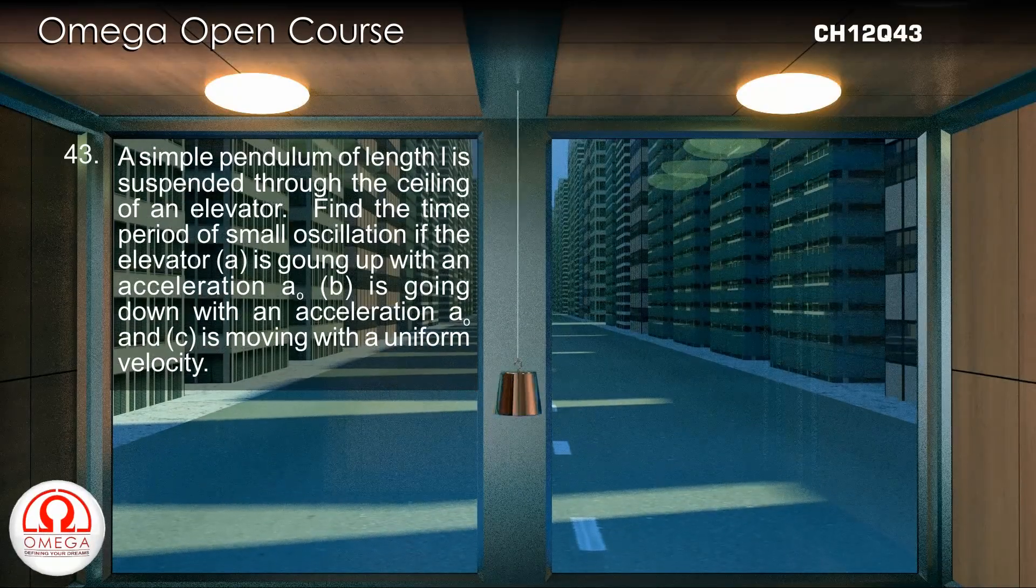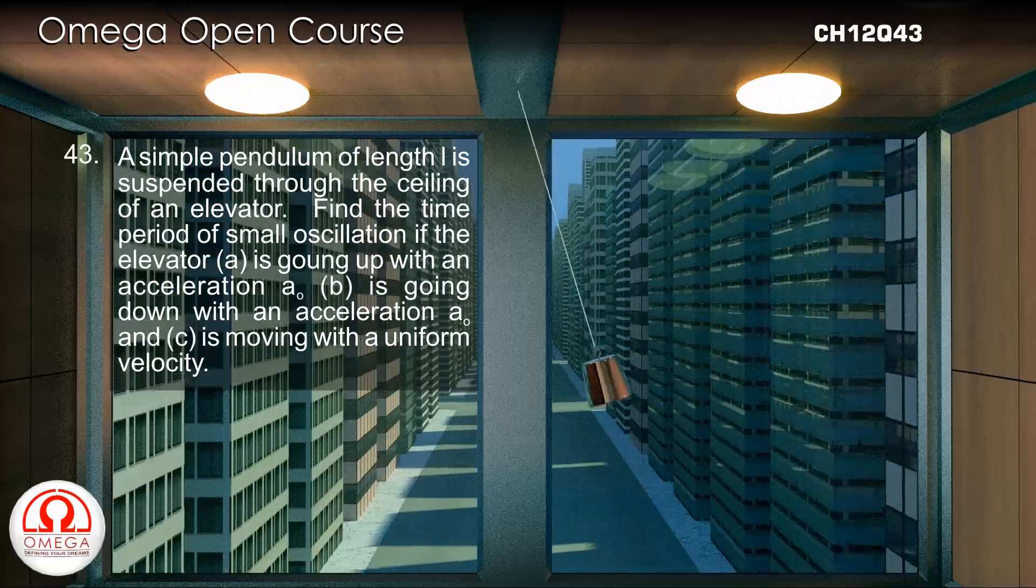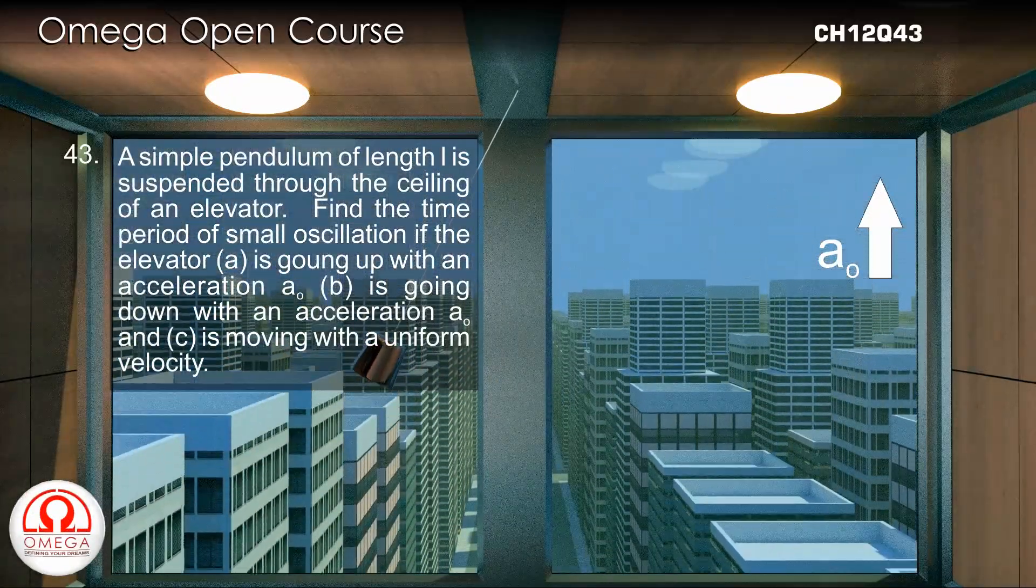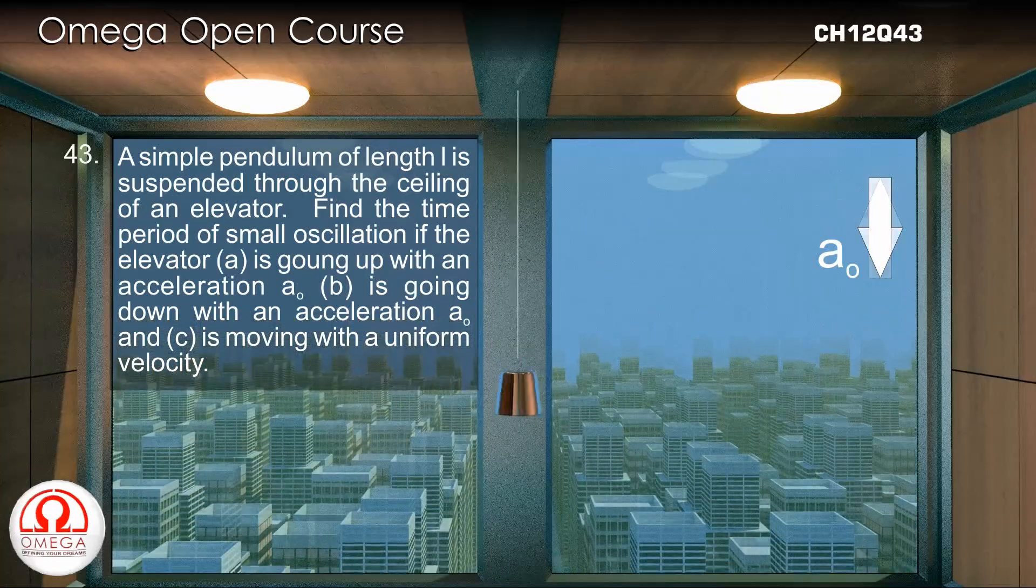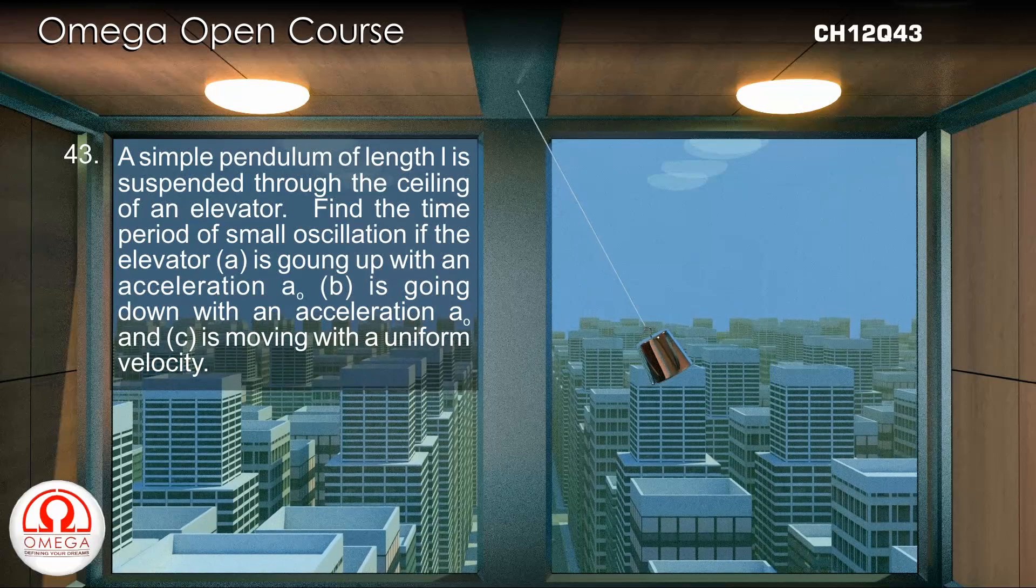A simple pendulum of length L is suspended through the ceiling of an elevator. Find the time period of small oscillations if the elevator A is going up with an acceleration A0, B is going down with acceleration A0, and C is moving with uniform velocity.